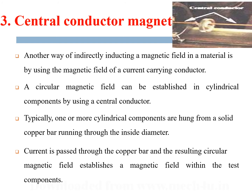Central conductor magnetization is another way to indirectly induce a magnetic field — a current-carrying conductor is placed inside or passed through the specimen to be inspected. A circular magnetic field can be established in a cylindrical component using one or two central conductors hung from a solid copper bar running through the inside diameter. This is used for hollow specimens: the conductor is placed inside and current is passed through, magnetizing the entire specimen. As shown in the figure, the central conductor passes through the opening of a gear, and the generated magnetic field in turn magnetizes the gear.